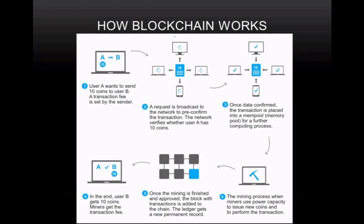Let's see how a blockchain transaction works. There is a user A and a user B. User A wants to send 10 coins to user B, and a transaction fee is set by the sender. A request is then broadcasted to the network to pre-confirm the transaction.